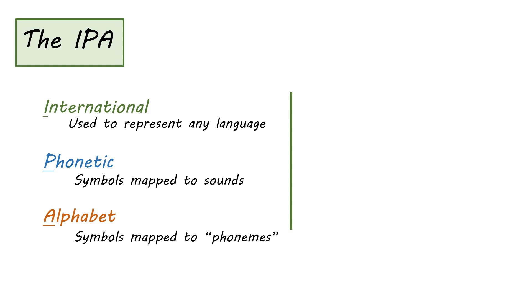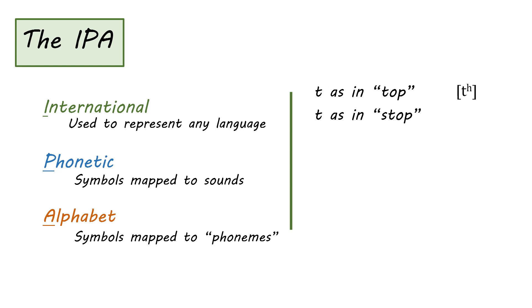When transcribing standard American English, the IPA lets us represent the difference between the T sound in 'top' and in 'stop.' If you put your hand in front of your mouth when you say 'top,' you can feel a puff of air after the T. When you say 'stop,' you don't feel that puff of air. The T in 'top' sounds like a strong T, while the T in 'stop' sounds more like a D — much less of a puff of air. We represent the T in 'top' with a T followed by a superscript H, and the T in 'stop' with a simple T.